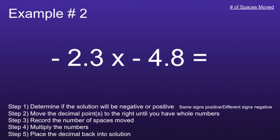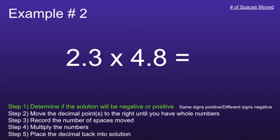Example number 2: negative 2.3 times negative 4.8. Step 1: determine if the solution will be negative or positive. If we look at the numbers, we can see that both numbers are negative. So we will use 'same signs positive.' Since both the signs are the same, I know my solution will be positive, so I can actually get rid of both those negative signs right away.